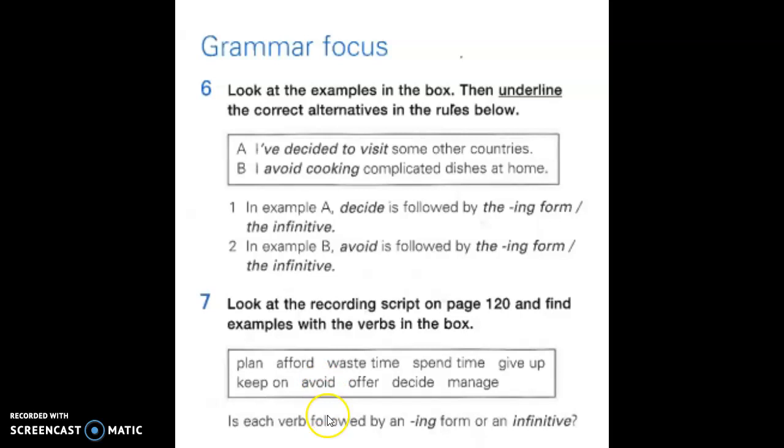And then you can get them to categorize these verbs into two columns. So you could make a table on your slide and in the first column put -ing and in the second column put infinitive. And they have to put the verb in the correct column. So you could put them into separate groups to do this and discuss together what they think goes where. And so, for example, plan to do. So that would go under infinitive. Waste time doing something. So that would go under -ing.